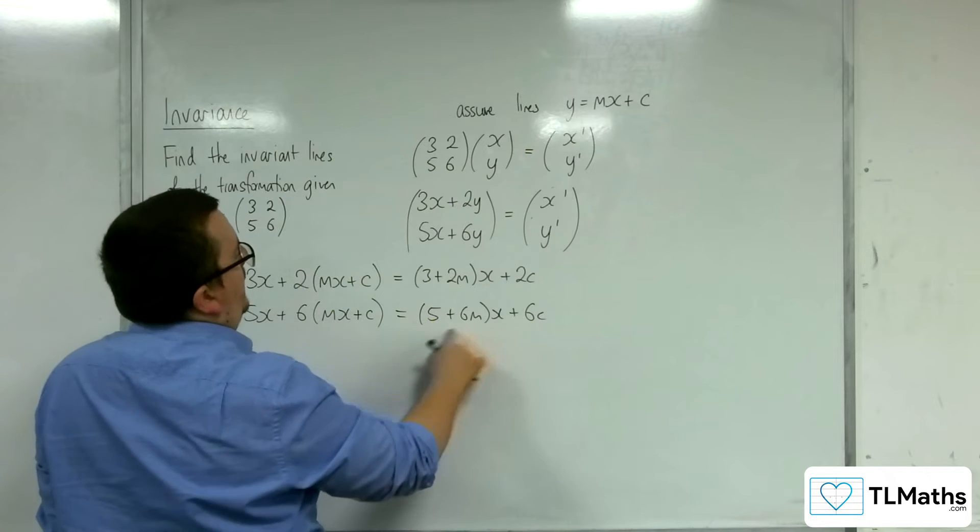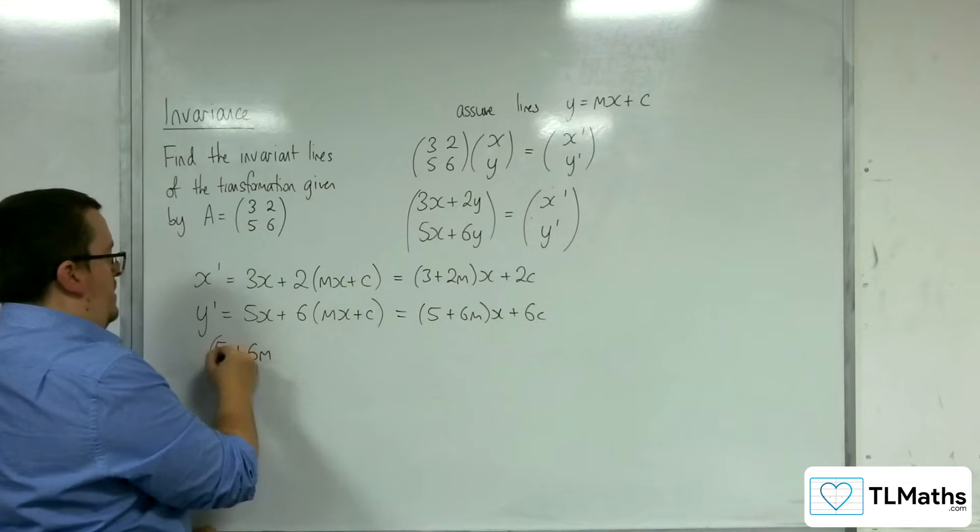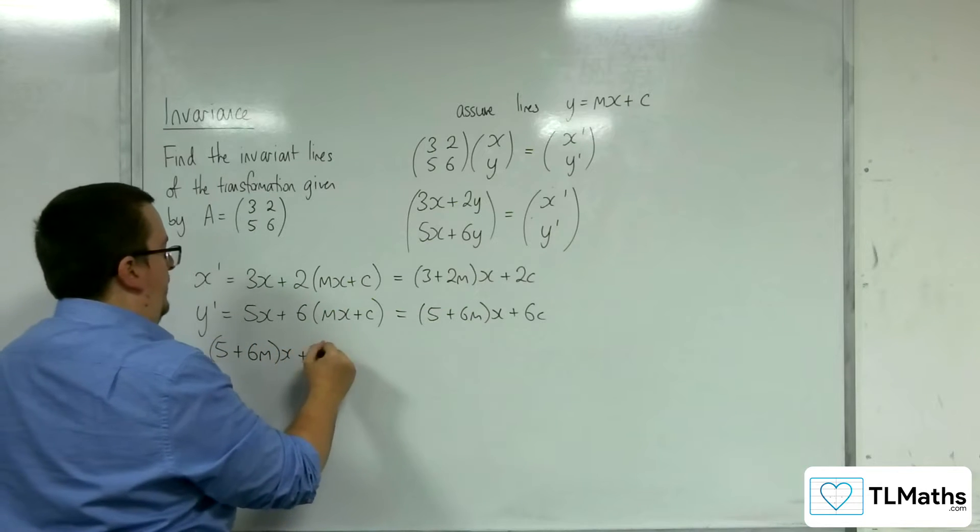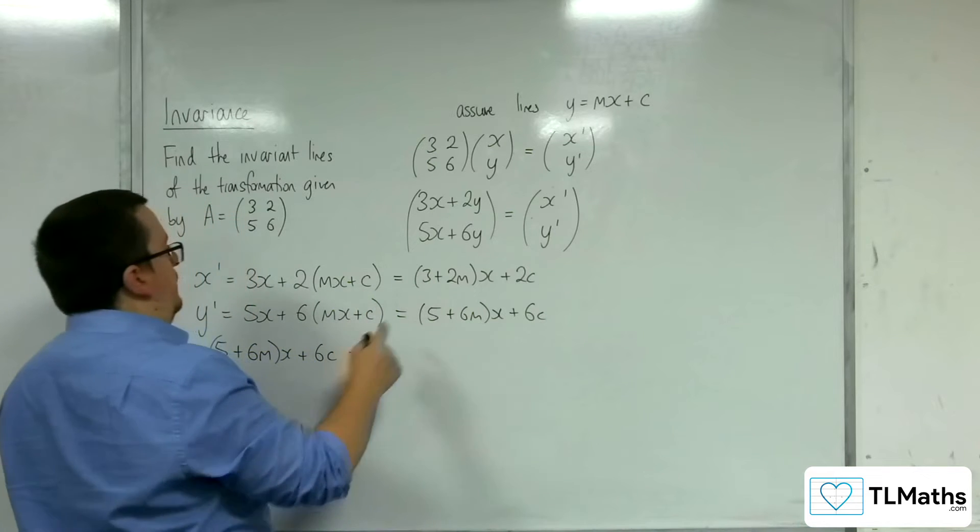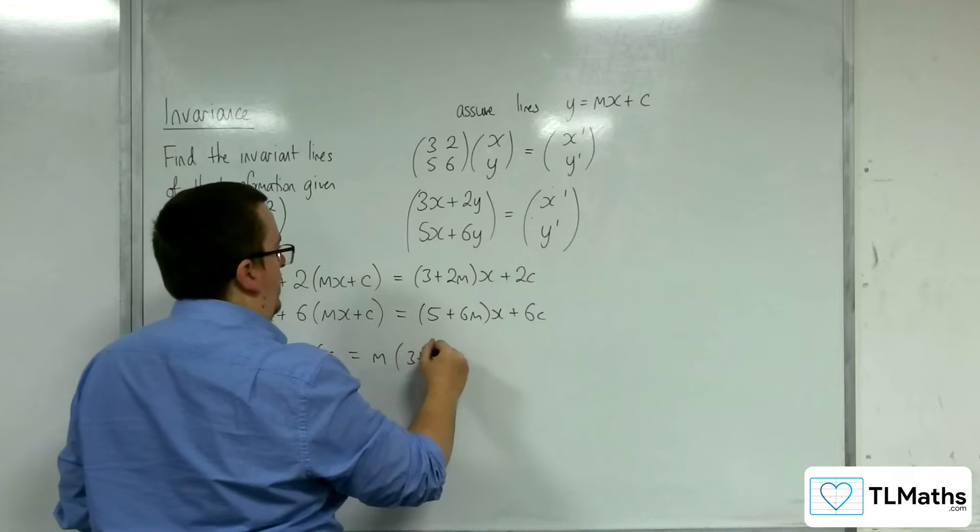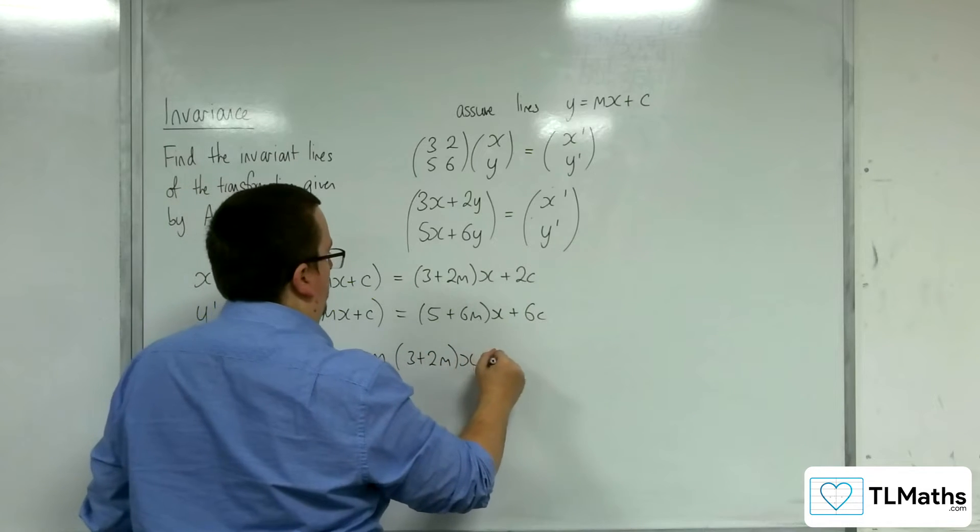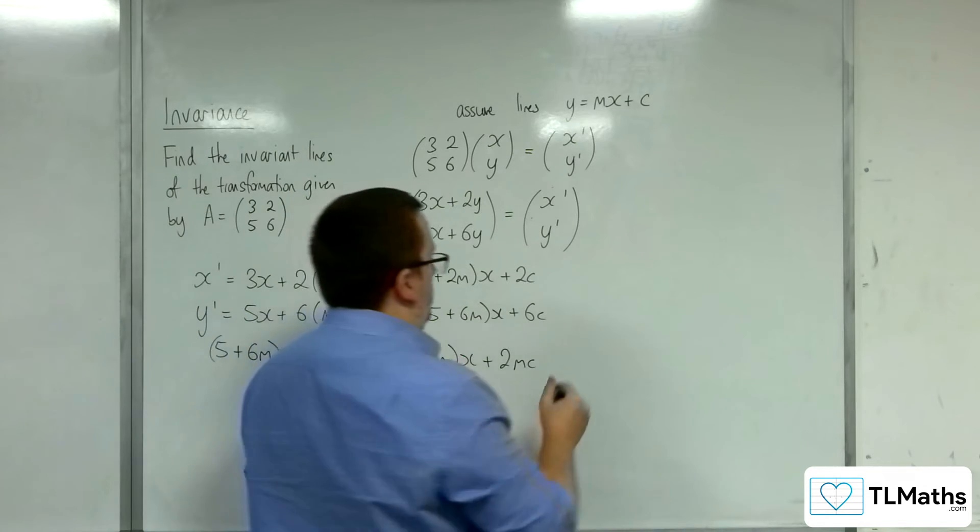So the y here is this. So we've got this 5 plus 6m times x plus 6c. And that's going to be equal to m times the x prime. So 3 plus 2m times x plus 2mc. And I've got that plus c on the end as well.